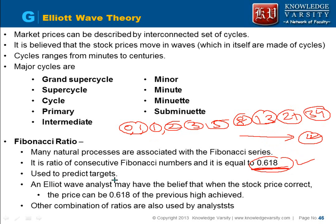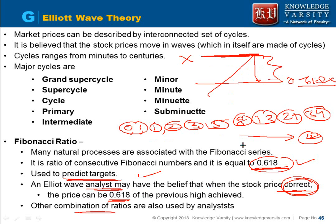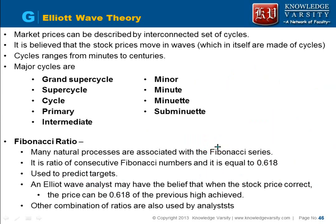The value 0.618 is used to predict price targets. An Elliott Wave analyst believes that when a stock price corrects — meaning it decreases after increasing — it will come down to 0.618 of the previous high. So if the previous high is x, the corrected price will be 0.618 times x. Other ratios used include 38.6% and 50%, representing various Fibonacci retracement values.